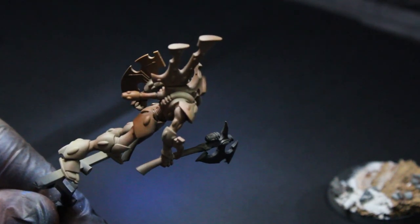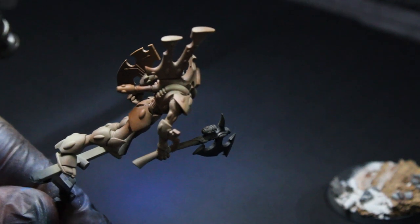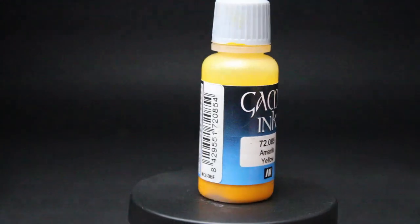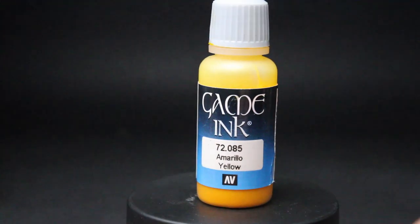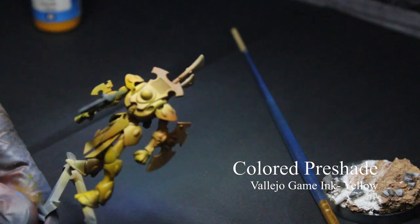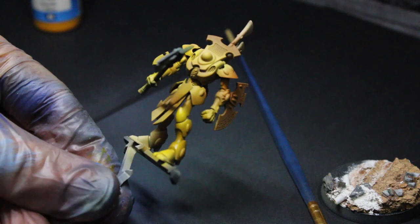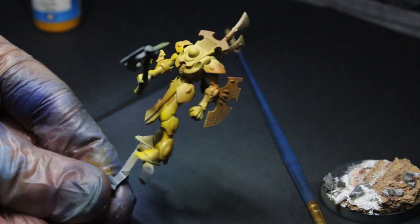The last step to get a nice yellow color is to thin lightly some yellow ink from Vallejo Game Ink. Blaze this over all the established undershades to get a nice warm yellow armor scheme. The ratio of ink to thinner is about one to three in this case.